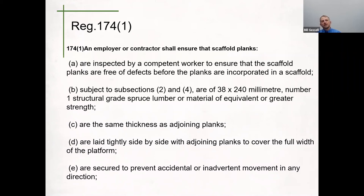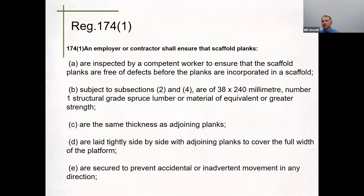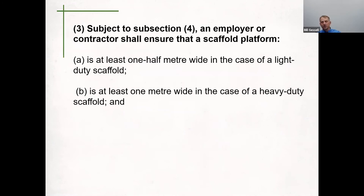Another requirement is that planks are laid the same thickness as adjoining planks. When building a working platform, use consistent material to prevent any trip hazards on the platform where workers will be standing. Planks are also laid tightly side by side with adjoining planks to cover the full width of the required platform width. We don't want one plank spaced six inches from another, providing an opening into which the worker could step or fall. Planks must also be secured to prevent accidental or inadvertent movement in any direction.